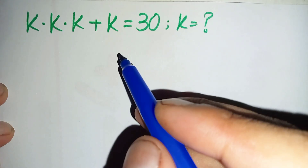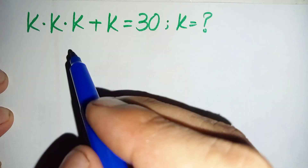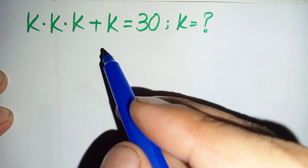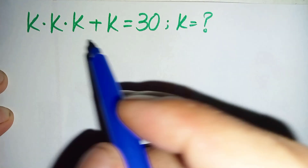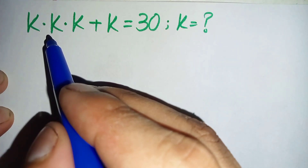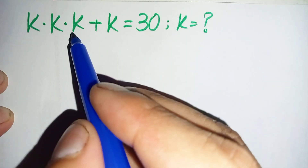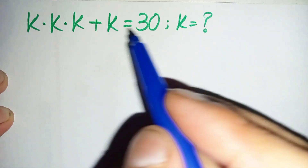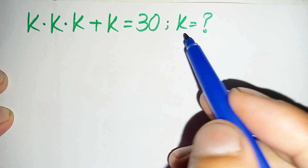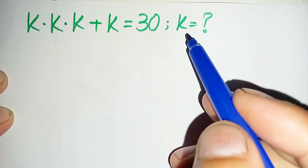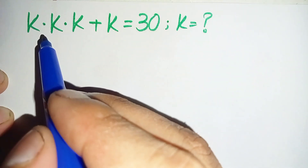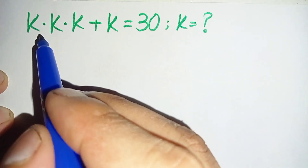Hi everyone, you are welcome. How to solve this nice algebra math problem: k times k times k plus k is equal to 30. Here we will try to find the value of k.